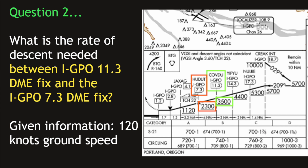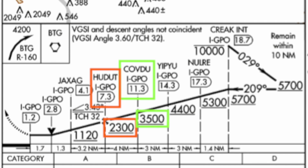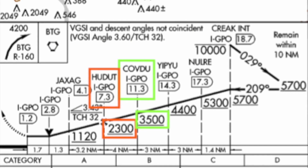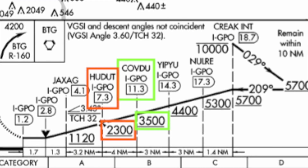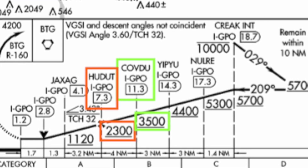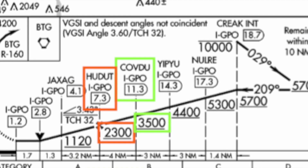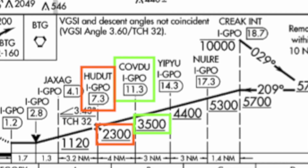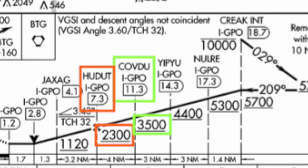Highlighted in green on the profile chart is the IGPO 11.3, also named Kavdu. Highlighted in orange is the IGPO 7.3, also named Hadat. You will notice that the altitudes are also indicated below each point. At Kavdu we need to be at 3500 feet, and by the time we reach Hadat we need to be at 2300 feet. The 11.3 represents the number of miles that position is from the DME station itself, so as we keep flying forward it makes sense that by the time we reach Hadat, that number would be down to 7.3. If we illustrate this path, it will look something like this.